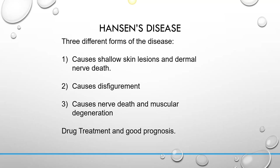There are three different forms of the disease: one causes shallow skin lesions and dermal nerve death, another causes disfigurement, and another causes nerve death and muscular degeneration. This can be easily treated with drugs, but the drugs take a really long time because Mycobacterium replicates very slowly — just like Mycobacterium tuberculosis. It grows in the colder macrophages, which causes even slower replication. Long-term antibiotic use is needed, but with treatment there's a relatively good prognosis, and even without treatment people can make full recoveries.